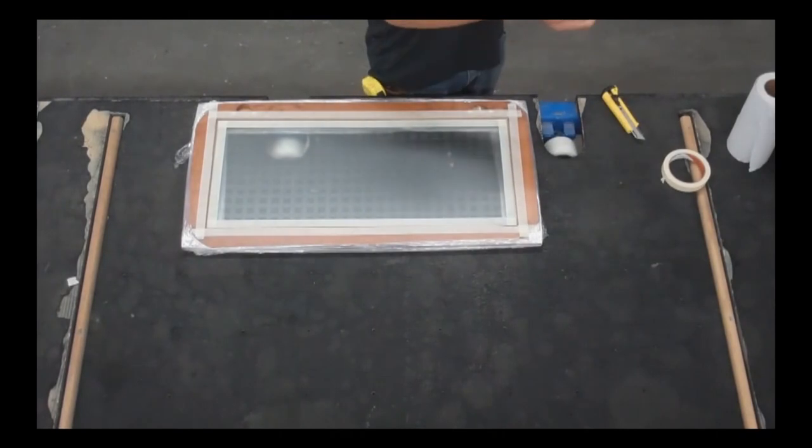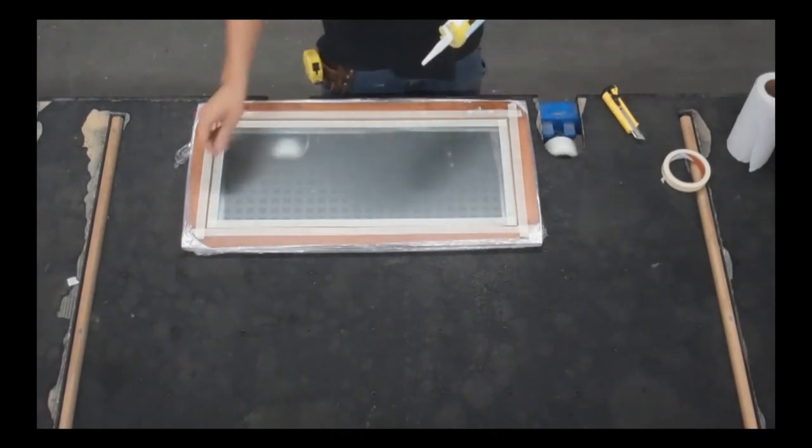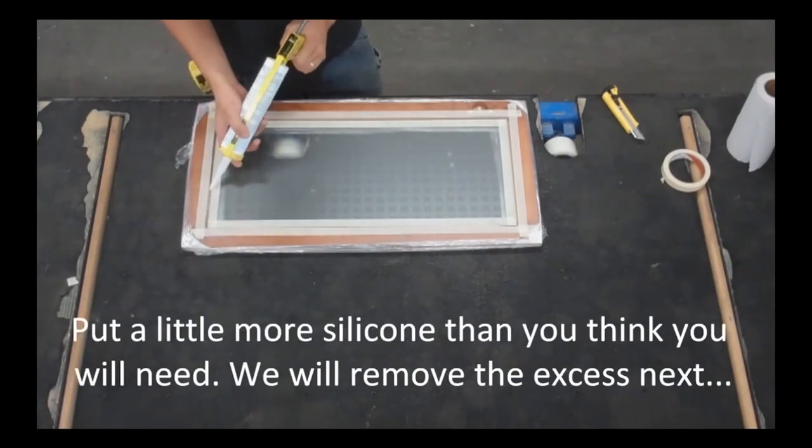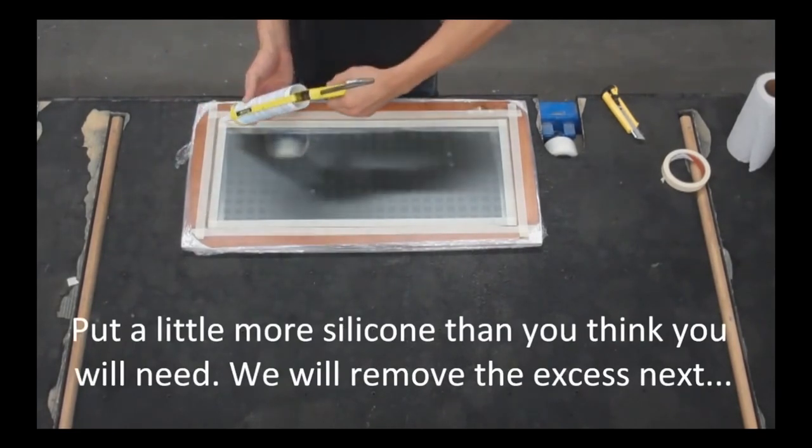So I take my silicone, remove the dry excess silicone from the tip, and I'm going to put a nice bead of silicone all the way around.